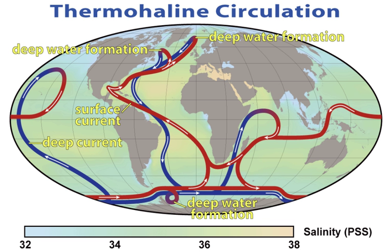Ocean acidification describes the decrease in ocean pH that is caused by anthropogenic carbon dioxide emissions into the atmosphere. Seawater is slightly alkaline and had a pre-industrial pH of about 8.2. More recently, anthropogenic activities have steadily increased the carbon dioxide content of the atmosphere. About 30–40% of the added CO2 is absorbed by the oceans, forming carbonic acid and lowering the pH now below 8.1 through ocean acidification. Calcium carbonate becomes more soluble with pressure, so carbonate shells and skeletons dissolve below the carbonate compensation depth.